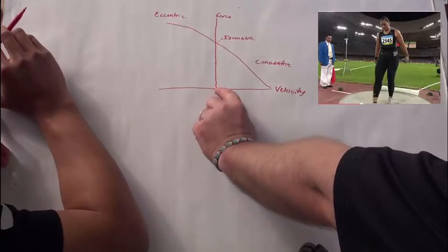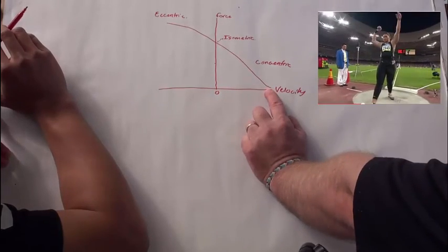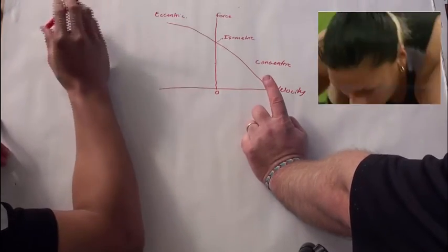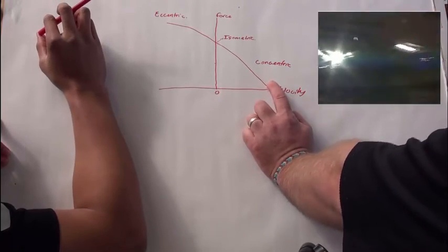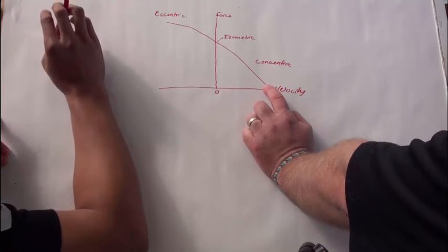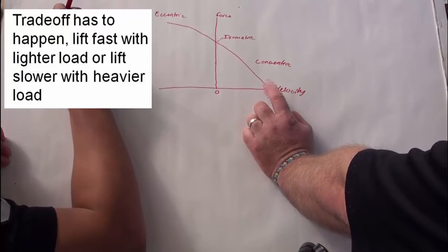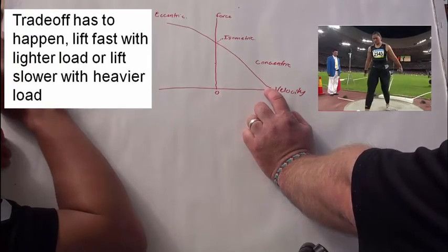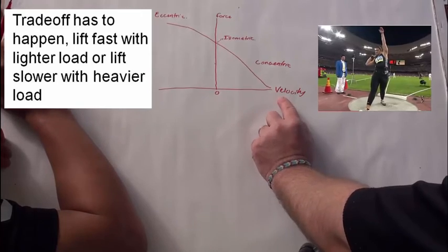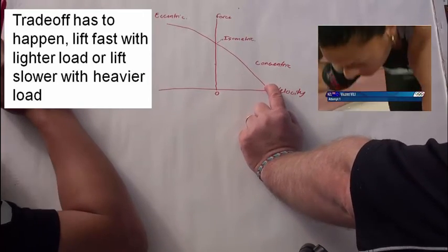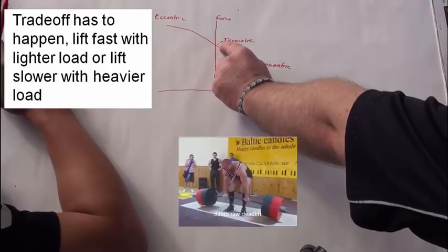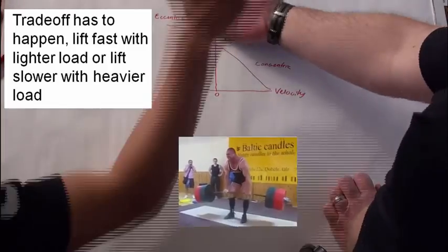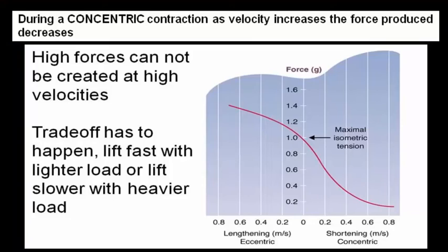Whereas if I want a lot of velocity during a concentric contraction, you wouldn't need much force. Good. My force would be compromised. So there's a trade-off. High forces can't be created at high velocities. So either we lift fast with a small force, or we lift slowly with a big force. Good man. Thank you very much.